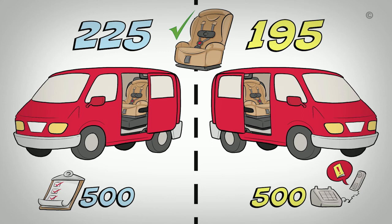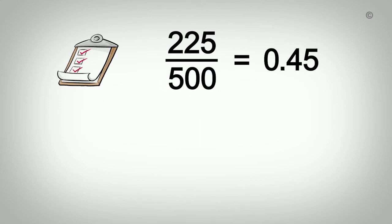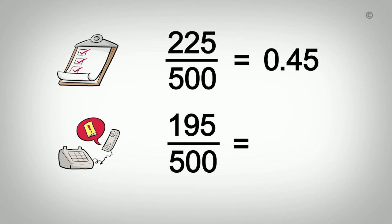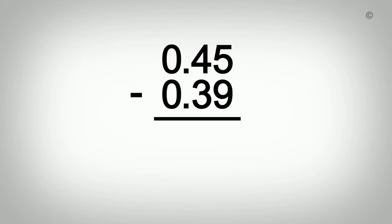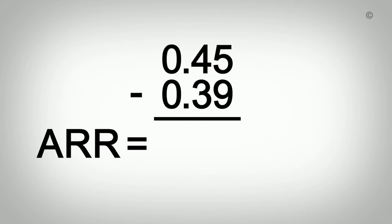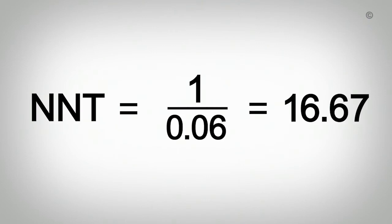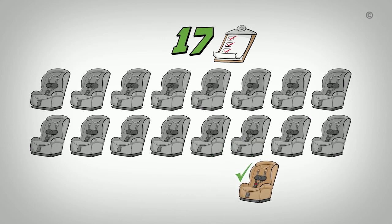We calculate the event rate in the intervention group by dividing the number of correctly installed car seats by the total number of people in the intervention group. So, 225 divided by 500, which equals 0.45. Using the same formula, we divide 195 by 500, which gives us an event rate in the control group of 0.39. To calculate the ARR, we subtract 0.39 from 0.45, which gives us an ARR of 0.06. The NNT is calculated by dividing 1 by 0.06, which gives us an NNT of 16.67. We round that up to the next whole number, giving us an NNT of 17, which means that 17 people need to attend the clinic in order for one car seat to be correctly installed one month later.